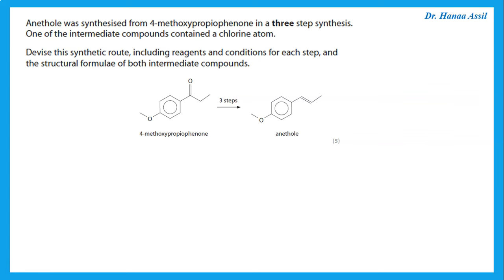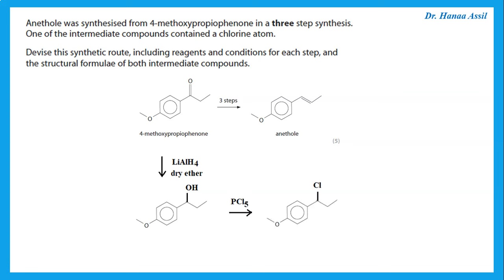One of the intermediate compounds must contain a chlorine atom. The difference between the starting compound and the final product is that we need a double bond instead of the C=O. We do a reduction to form the alcohol, then react with PCl5 — satisfying the requirement for a chlorine-containing intermediate — to give the halogenoalkane. Finally, we react with alcoholic KOH under heat for dehydrohalogenation — elimination of H and Cl — to form the double bond.